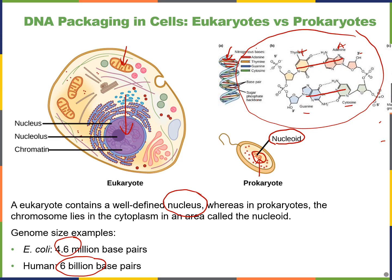That is quite big. In fact, if you stretch out the DNA in E. coli, it would be about 1.1 millimeters long — yet it has to fit into a cell that is about 1 micrometer in diameter. How prokaryotic cells compact their DNA is by supercoiling their DNA.